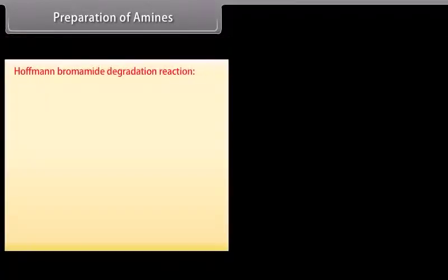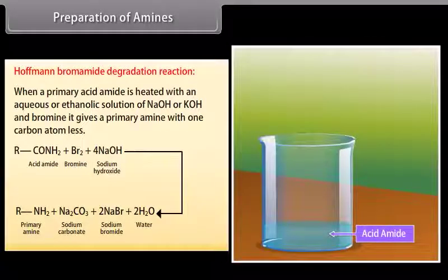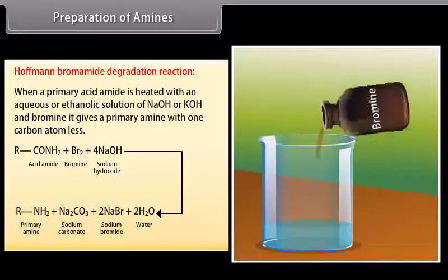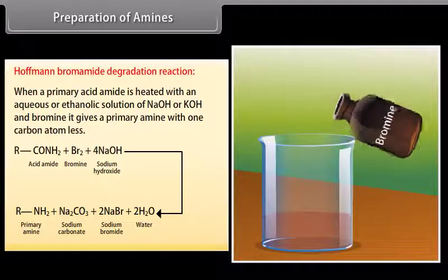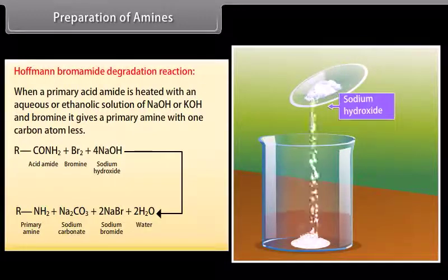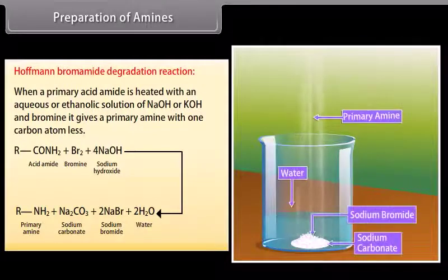Hofmann bromamide degradation reaction: When an amide is heated with an aqueous or ethanolic solution of NaOH or KOH and bromine, it gives a primary amine with one carbon atom less.